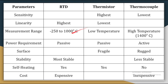Now let us talk about the measurement range. RTD is used to measure temperature between minus 250°C to 1000°C. Thermistor is used for low temperature applications — sometimes even at cryogenic temperatures. Thermocouple is used for high temperature applications; temperatures above 1400°C and higher are measured by thermocouple.